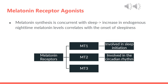Melatonin synthesis is concurrent with sleep, so the increase in endogenous nighttime melatonin levels correlates with the onset of sleepiness. The sleep-promoting and circadian effects of melatonin are due to agonism of both MT1 and MT2 receptors. Agonism of MT1 receptors directly facilitates inhibition of neuron firing, promoting sleep, whereas activation of MT2 receptors affects the circadian rhythm settings related to the central clock.